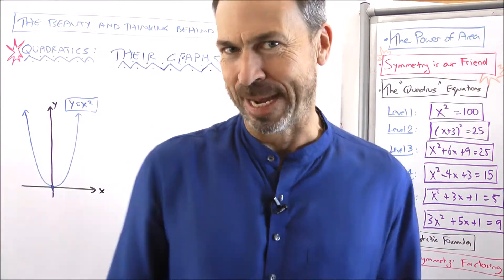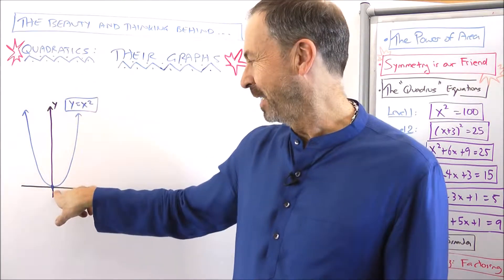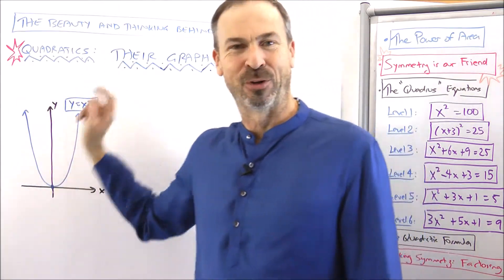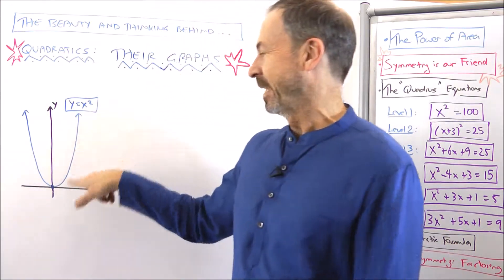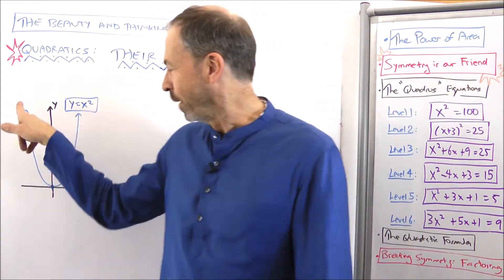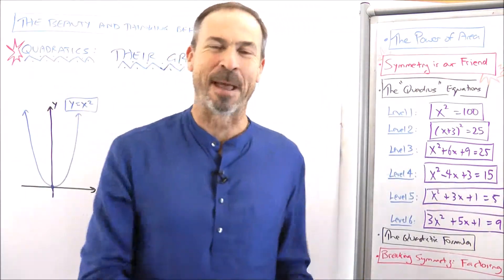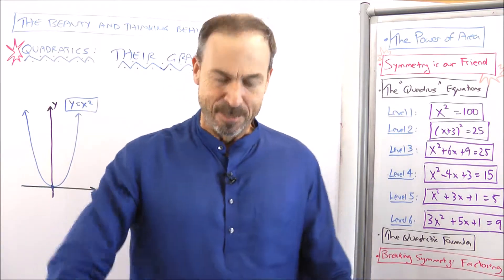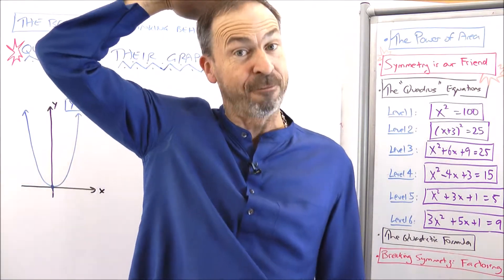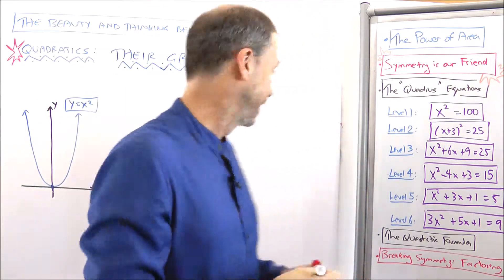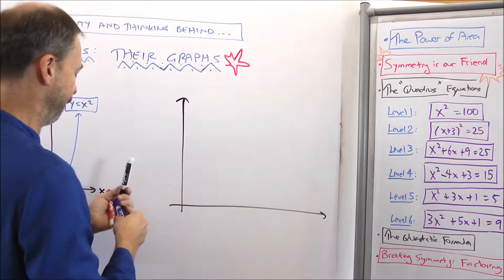Let me give you another puzzle. Consider our beautiful symmetrical U-shaped graph based at the origin, having this lovely symmetry on either side. I like this graph so much I'd like to have one of these U-shaped graphs balancing on my head. I'm in America where heights are measured in feet, and I'm exactly six feet tall. Suppose I'm standing on some axes at position four.